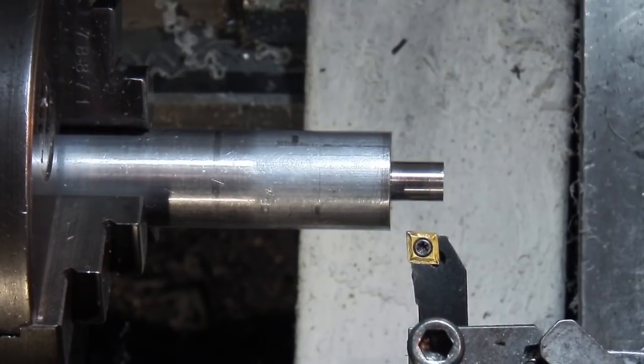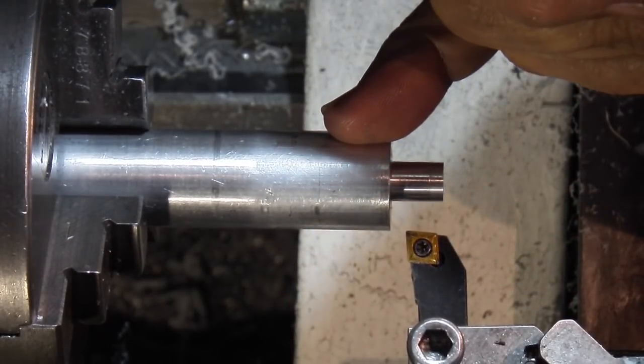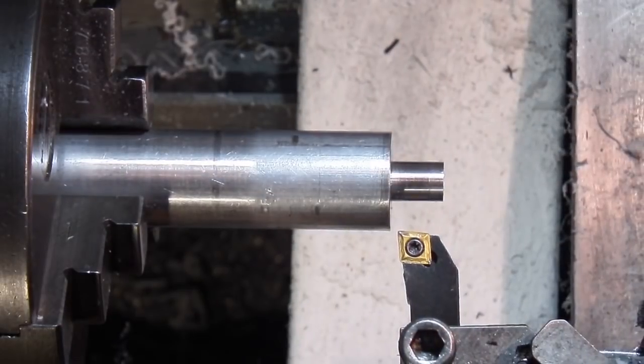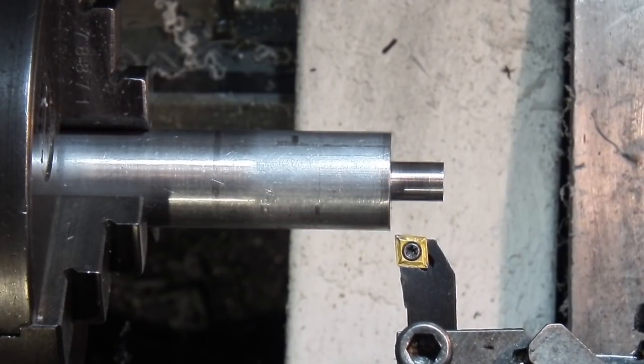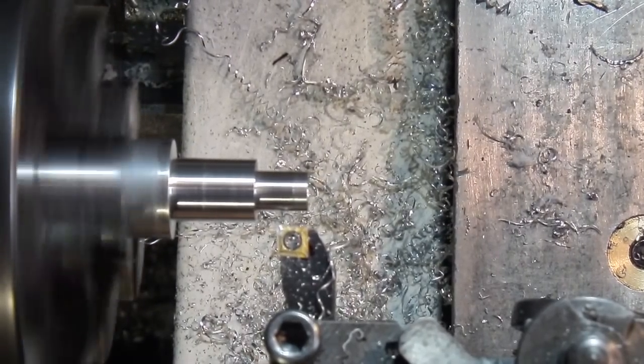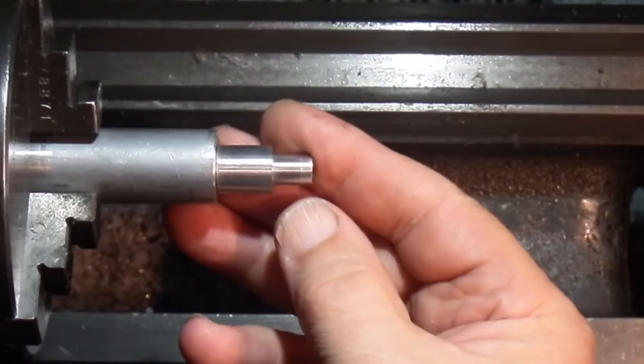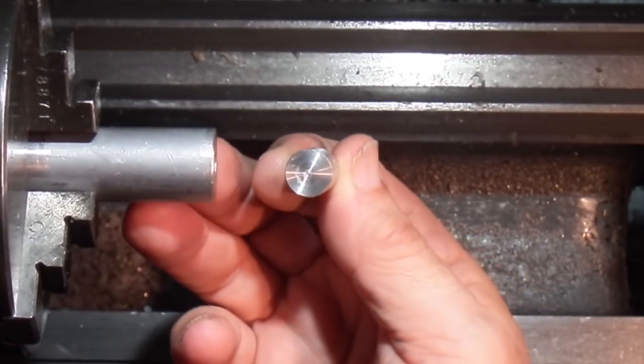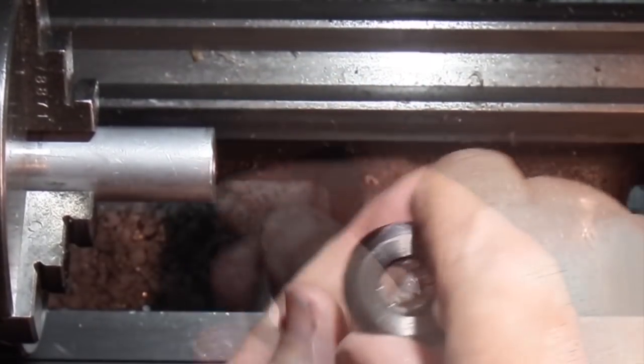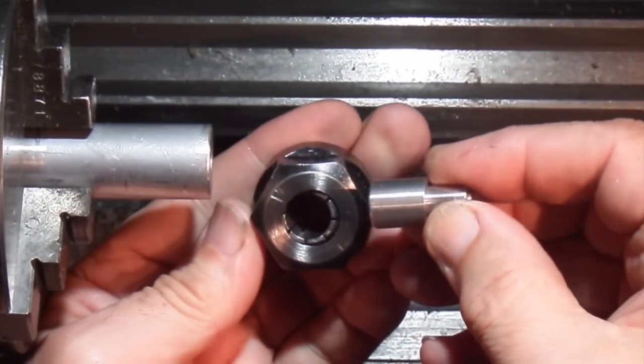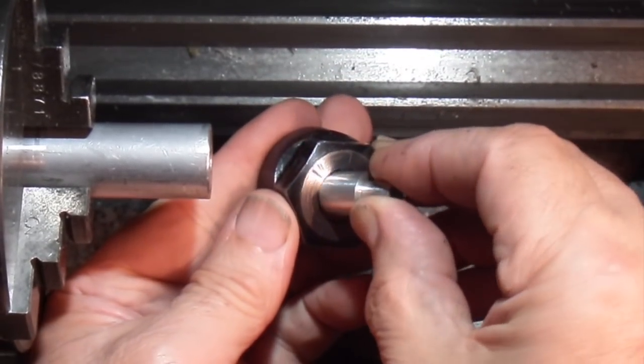The next thing I want to do is turn the outside diameter down to half an inch and part this off so I can use the mandrel part on my indexing fixture. Now this part that I've made, the small mandrel, fits into a half inch collet.